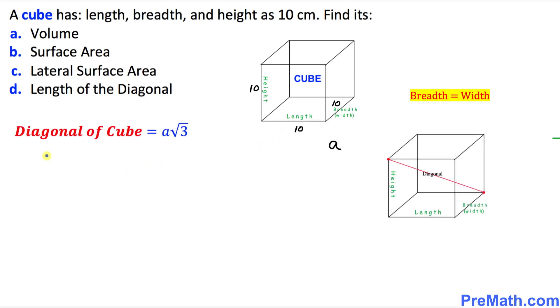Finally, we are going to calculate the diagonal of this cube. Here you can see the diagonal is this red line. This is the distance between these two opposite vertices. Let's go ahead and calculate this one.